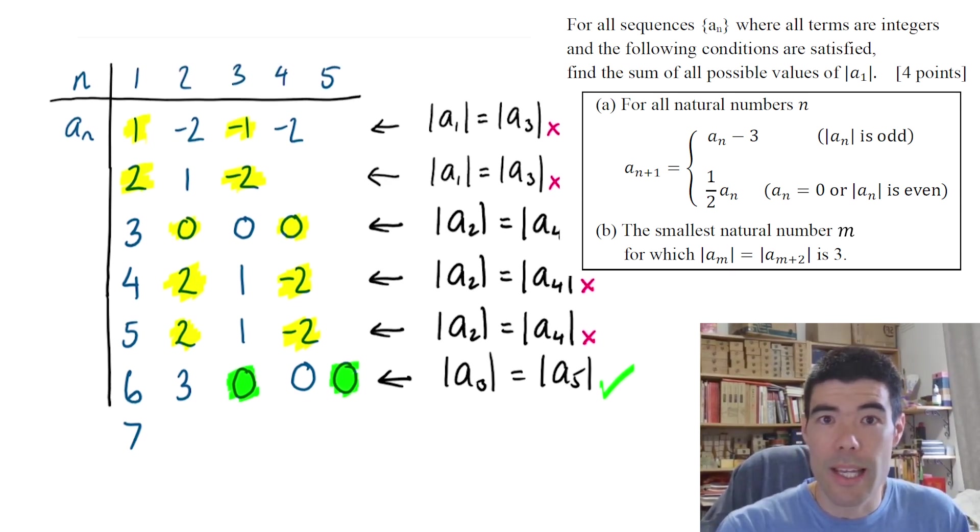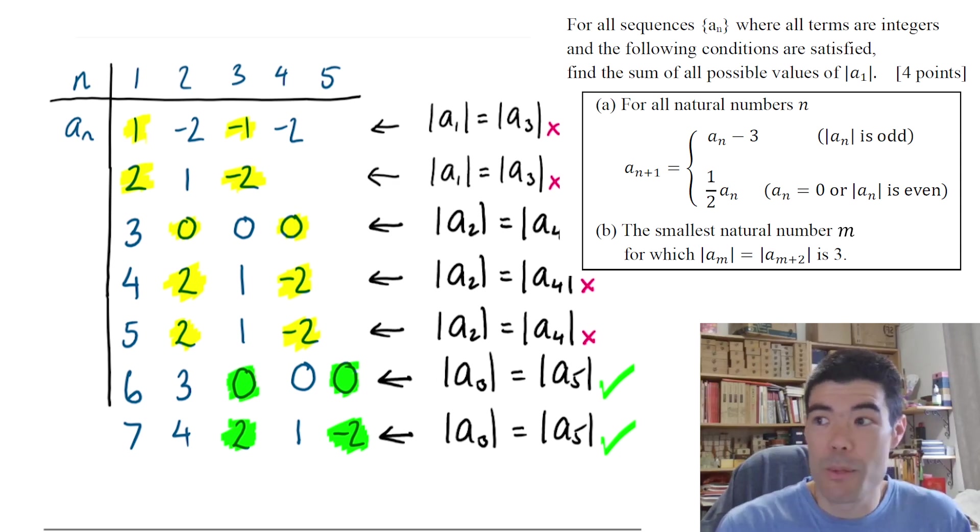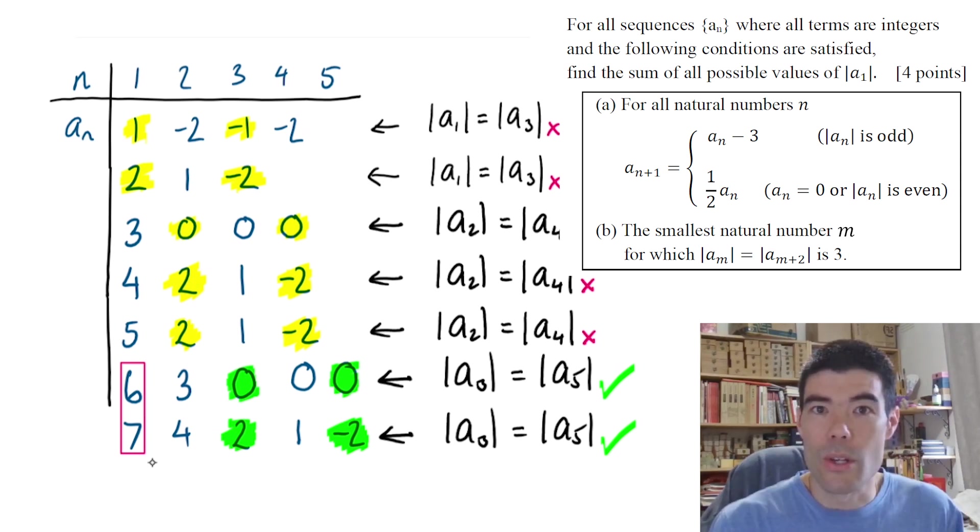We might just do one more. So let's take a_1 as 7, subtract 3 to get 4, divide by 2 to get 2. We're going to get a 2, 1, negative 2 pattern again. This is good. Again, this is really good. So a_3 and a_5 both have an absolute value of 2. So this also passes the test. So, so far we have two sequences that work, in which case a_1 could be 6 or 7.